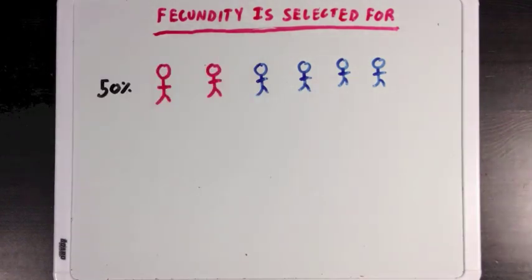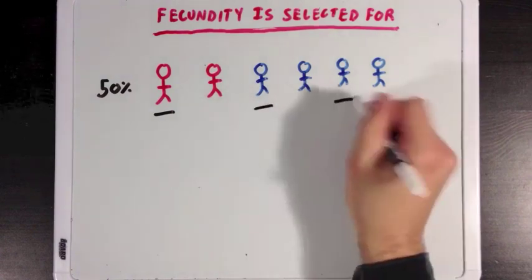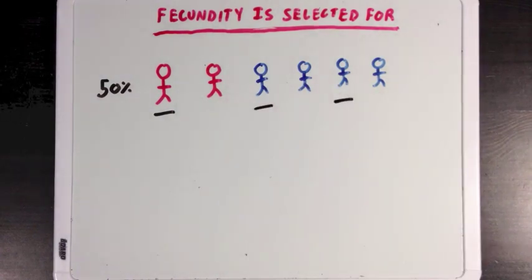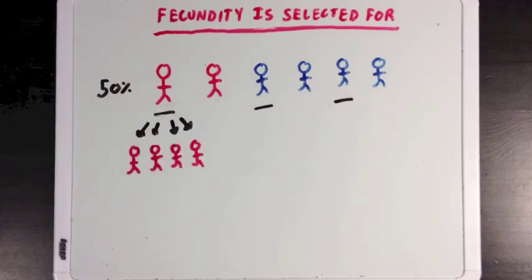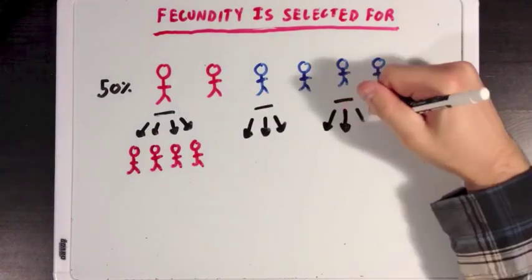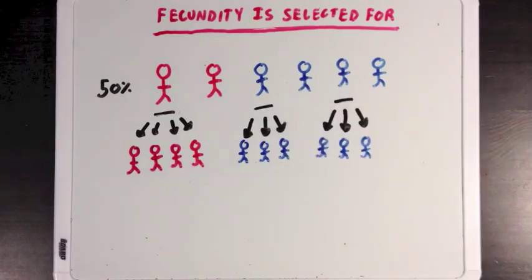What this means is that one of our red people will survive to an age where they can reproduce, and two of our blue people will survive. But the difference between the two is that the red people who survive will each be able to produce four offspring, whereas the blue people who survive will only be able to produce three each.